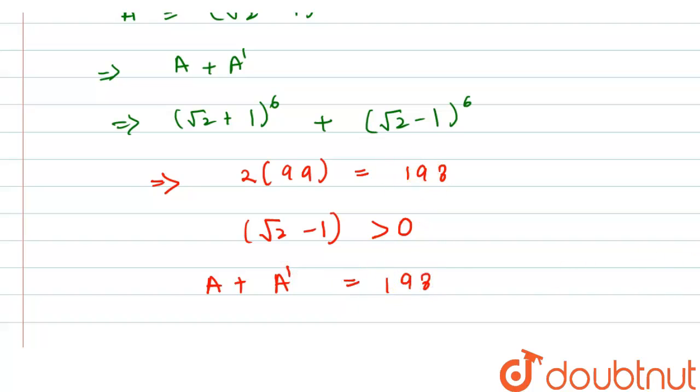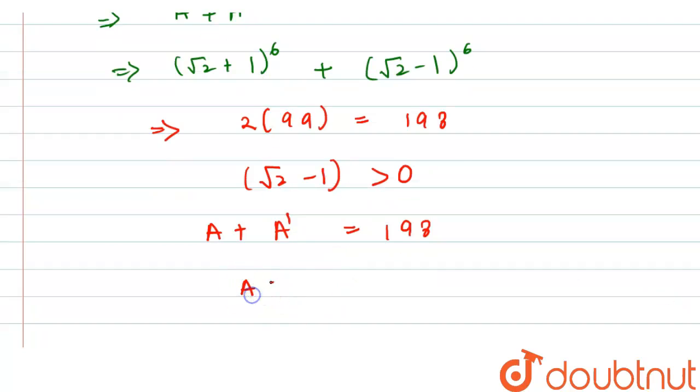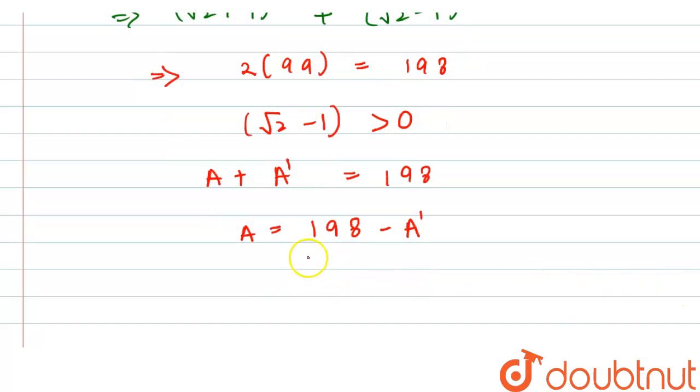From here we can write it as a = 198 - a'. So finally here we can see that the value of a is greater than 197 and less than 198.